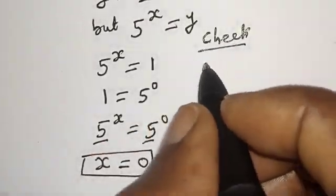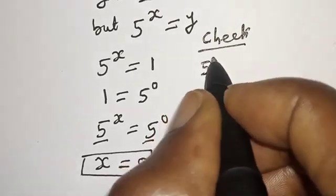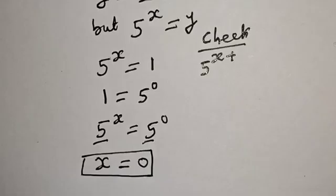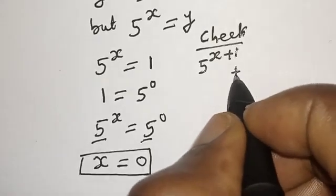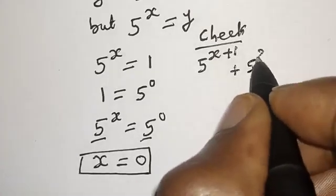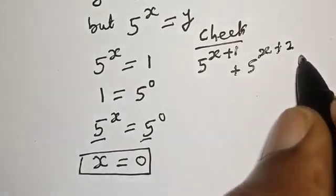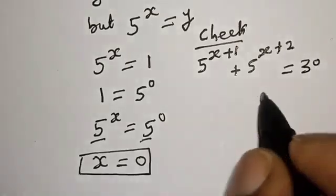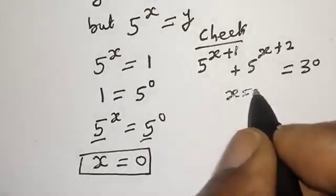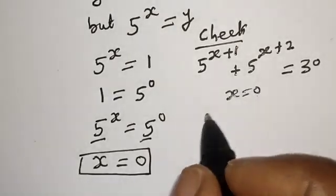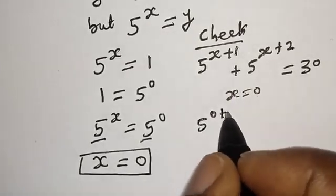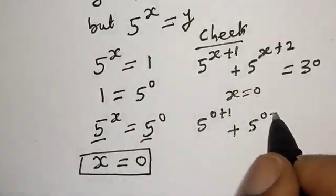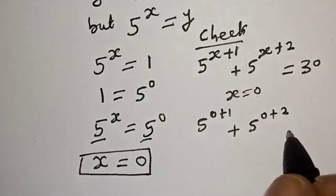Now let's check. We have the given equation: 5 raised to power x plus 1, plus 5 raised to power x plus 2, is equal to 30. Substituting x equal to 0, this becomes 5 raised to power 0 plus 1, plus 5 raised to power 0 plus 2, which must equal 30.